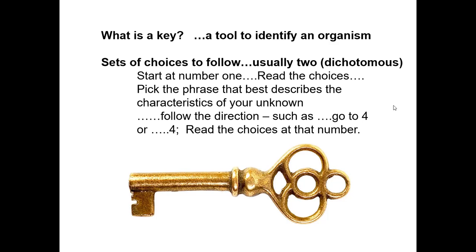If it says go to four, you skip choices two and three and go right to four. You don't even look at two and three. Then you read the two choices at four, see what they are, pick the one that fits your organism, and it will again tell you where to go.